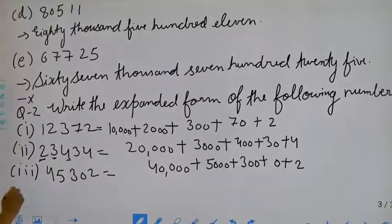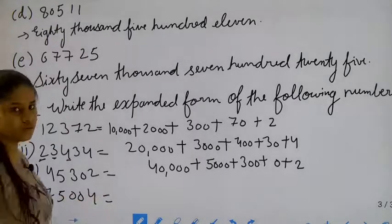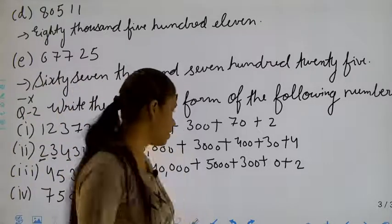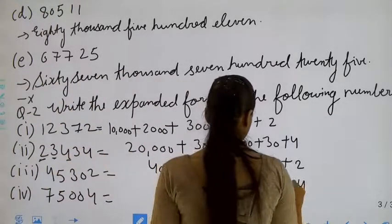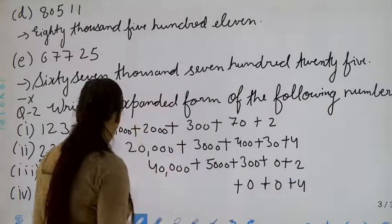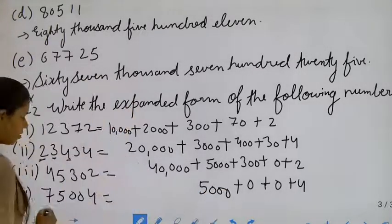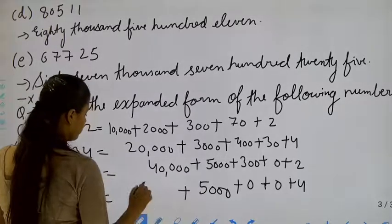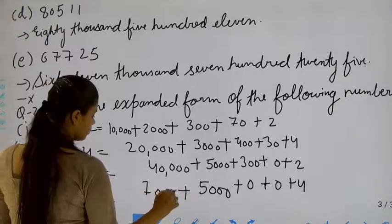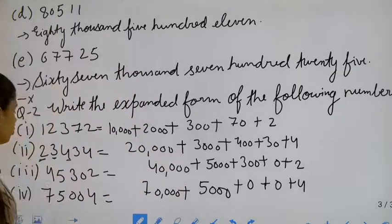Now move to the next. Ones, tens, hundred, then thousand — it will be five thousand, and then ten thousand — it will be seventy thousand, that is seventy-five thousand, four. Now, if you want to take a screenshot, you can take it, then we will move to the next part.